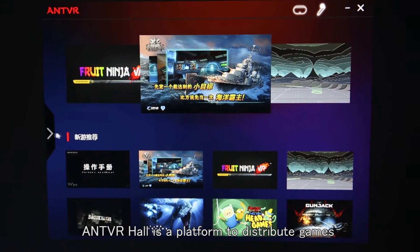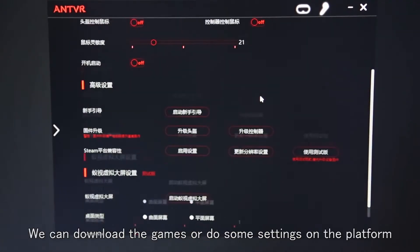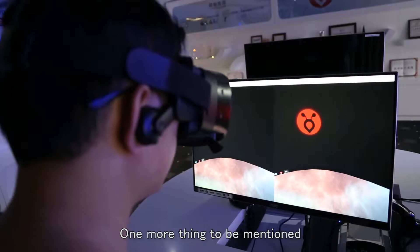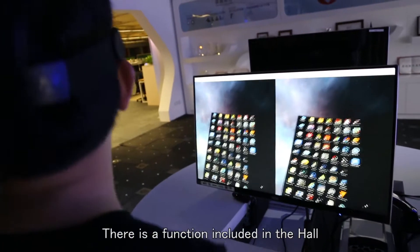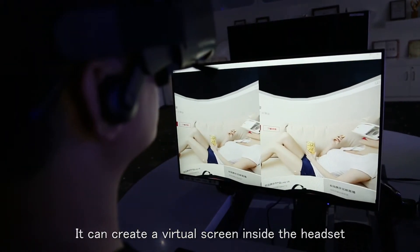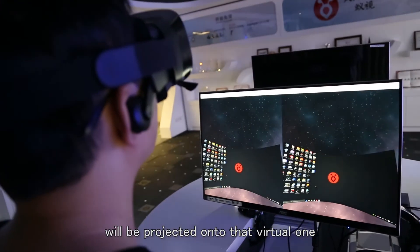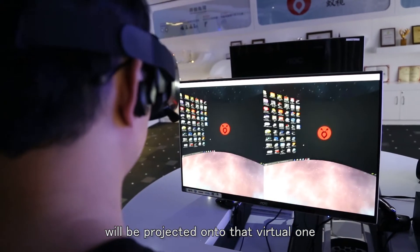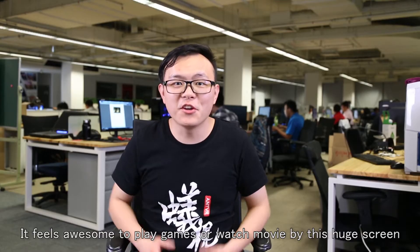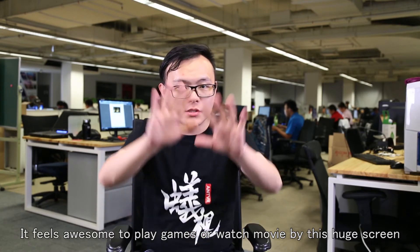AntVR Hall is a platform to distribute games and to control Cyclops devices. You can download the games or do some settings on the platform. One more thing to be mentioned. There's a function included in the hall. It can create a virtual screen inside the headset. The display on monitor screen will be projected onto that virtual one, of which you can control the size and shape. It feels awesome to play games or watch movies by this huge screen.